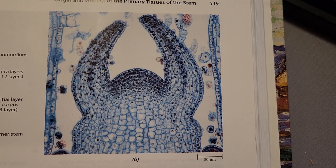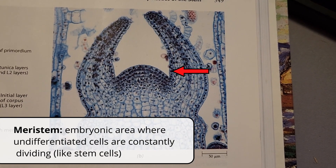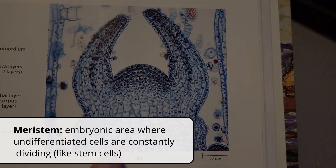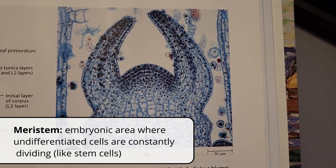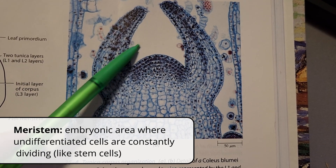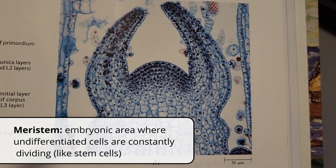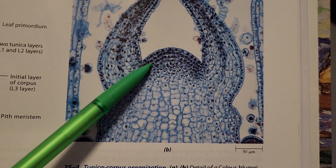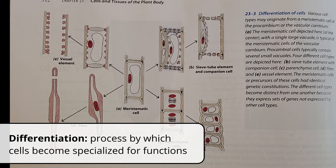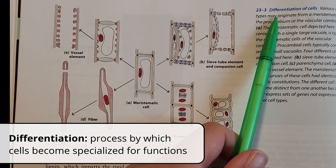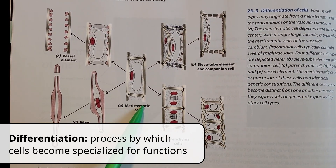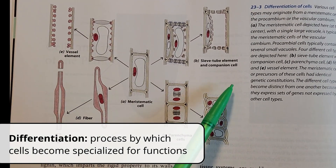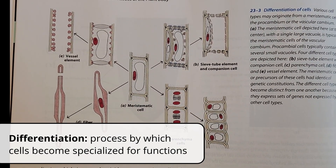The part of the plant responsible for all this growth is called a meristem. The meristem is a set of cells that are embryonic, meaning they're like stem cells — they don't have a purpose or function yet, and they can become anything. They're constantly dividing into more and more cells. Once the cells undergo a process called differentiation, they become specialized for a specific function, based on what genes are expressed and where they're located within the plant.